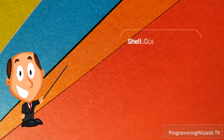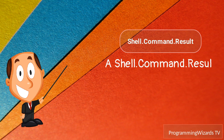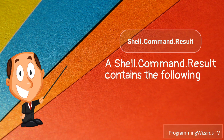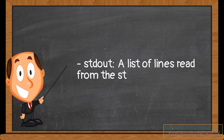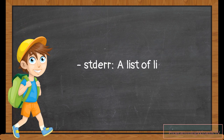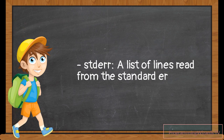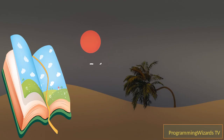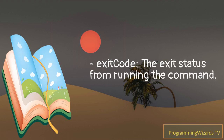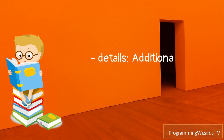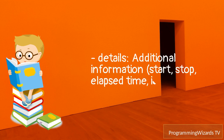Please tell us more about the shell command result. A shell command result contains the following: stdout — a list of lines read from the standard output stream; stderr — a list of lines read from the standard error stream; exit code — the exit status from running the command; and details — additional information including start time, stop time, elapsed time, ID, and command.